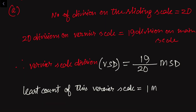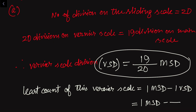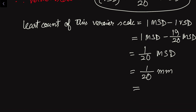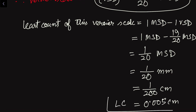The least count equals one main scale division minus one vernier scale division. Substituting, that is 1 minus 19/20 = 1/20 of a main scale division. Since one main scale division equals 1 millimeter, the least count is 1/20 mm, which equals 1/200 cm, or 0.005 cm. So the least count of the vernier scale is 0.005 cm.